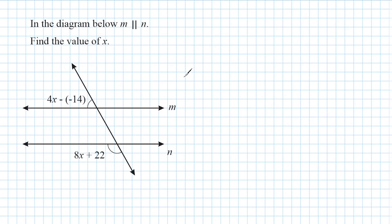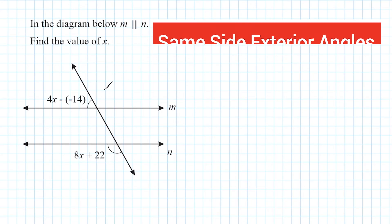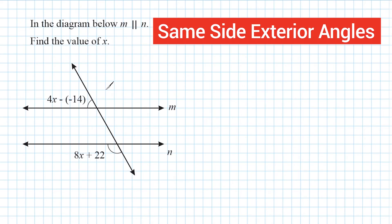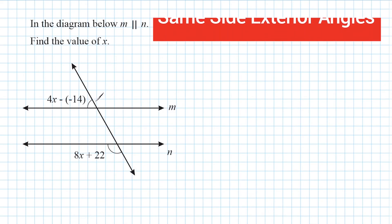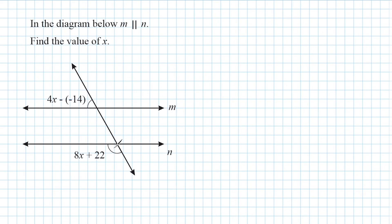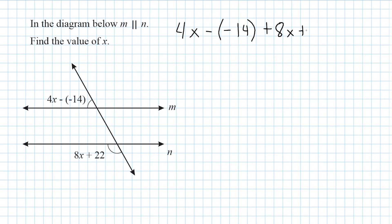Let's do one last example. The first thing we want to do is identify what kind of angles we are dealing with. Both of these angles are located on the outside of our parallel lines, so we are dealing with exterior angles. Both angles are on the same side of our transversal, so these are same side exterior angles. With same side exterior angles, the angle measures will have a sum of 180 degrees — they are not congruent unless each angle were 90 degrees, which is clearly not the case here. We take each expression and add them together and set that sum equal to 180 degrees: 4x minus negative 14 plus 8x plus 22 equals 180 degrees.